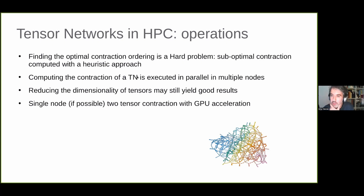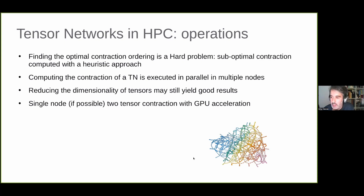Once we have a clear ordering of the contraction operations, we perform the contraction itself, which can be executed in parallel across multiple nodes. We can still perform these approximation operations in a distributed manner. At the level of single-node operations, acceleration can be applied, and kernel operations done on small sets of tensors can be accelerated using GPUs.